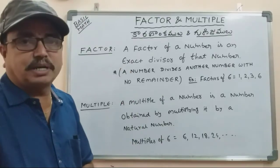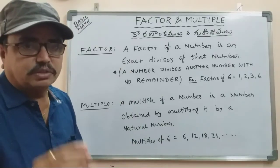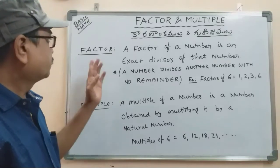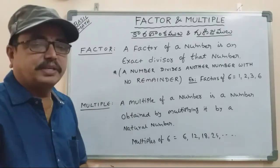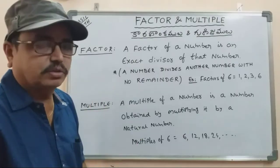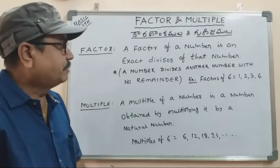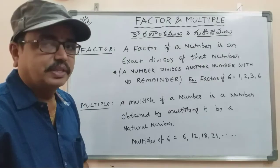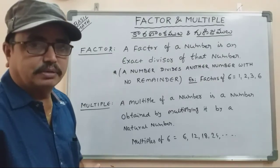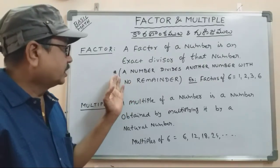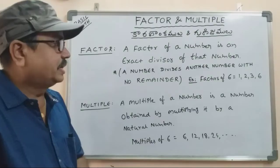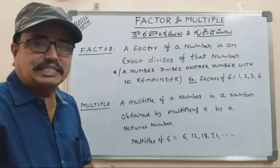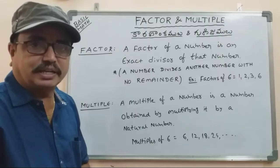This factor and multiple concept is very important and it is very simple. A factor of a number is an exact divisor of that number — meaning it divides the number with no remainder. That is the factor.